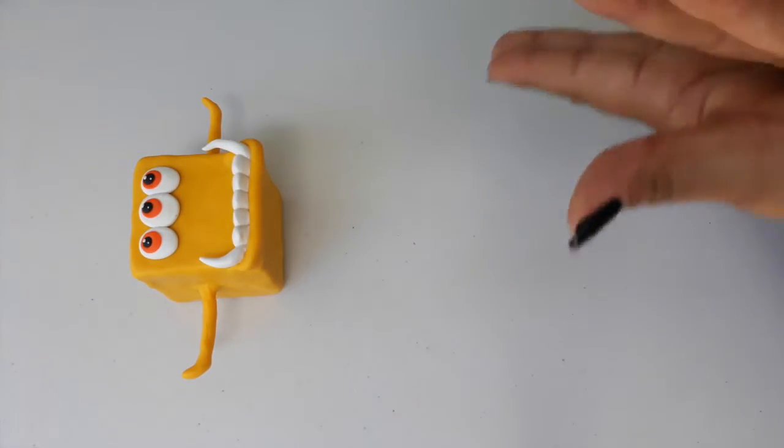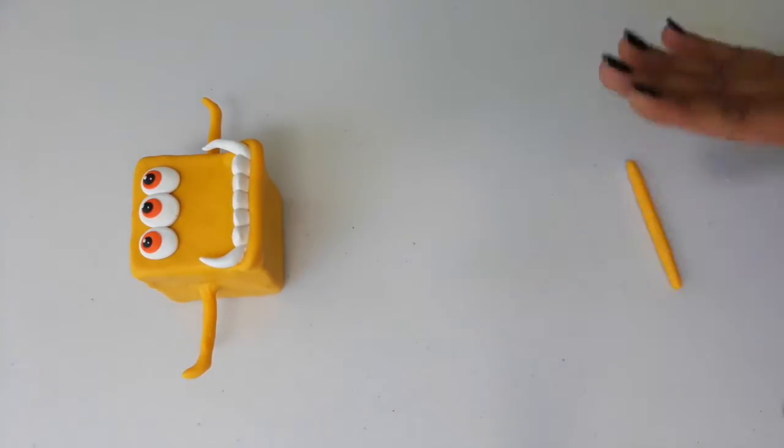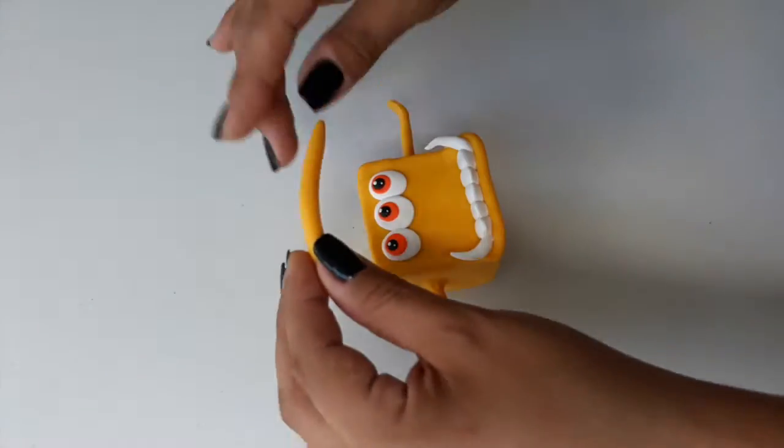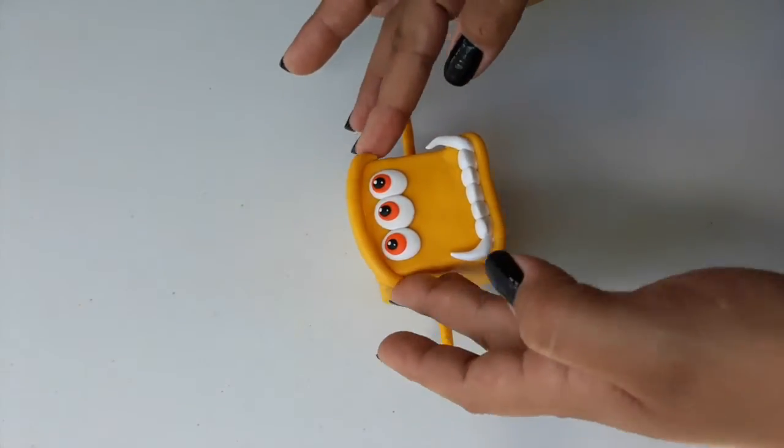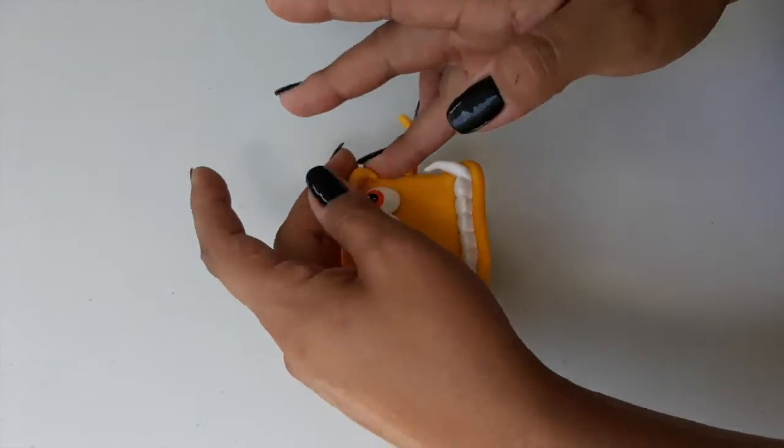Moving on to the eyes. Place your Monster Brother's three pre-baked eyes at the top of his face. Take a bit of clay the same color as the rest of the body, roll it into a thin cylinder and place above the eyes for the brow bone.